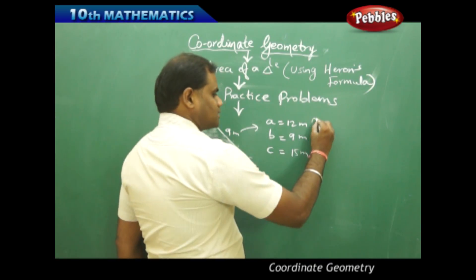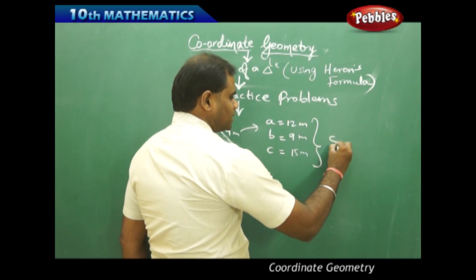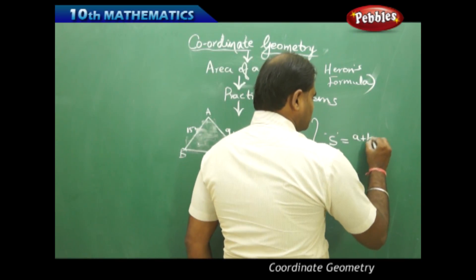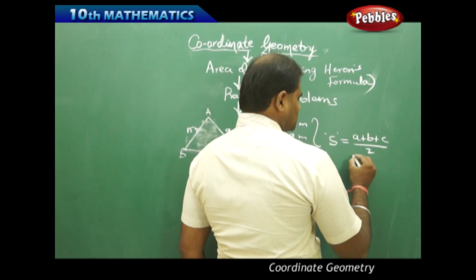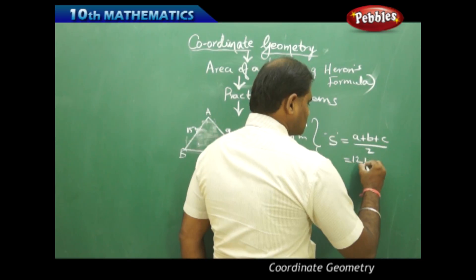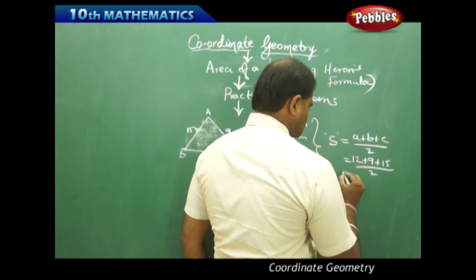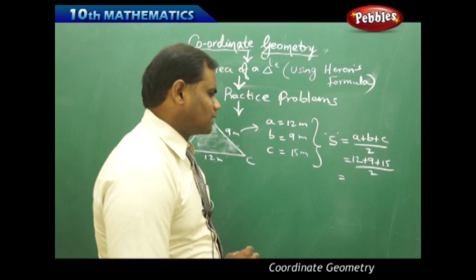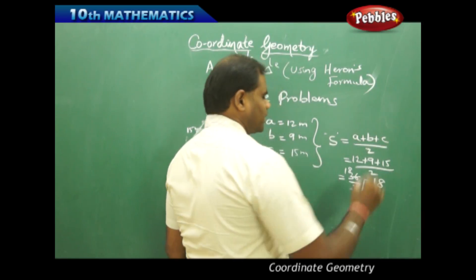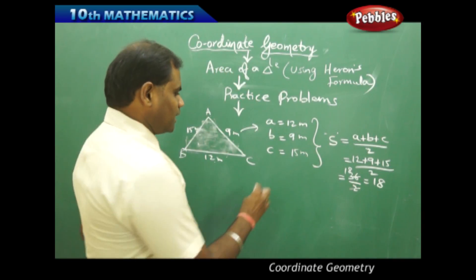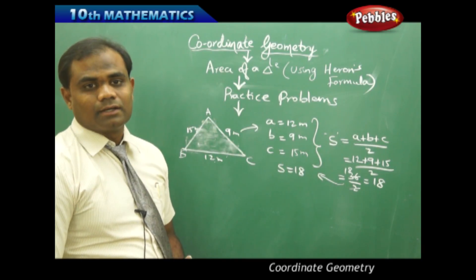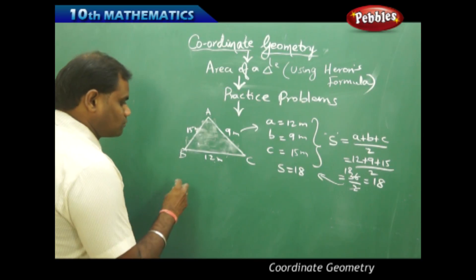Using the three sides to apply Heron's formula, I first need to find the semi-perimeter S, given by (A plus B plus C) divided by 2. Substituting, that is (12 plus 9 plus 15) divided by 2, which equals 36 divided by 2, which is 18. Therefore, my S is 18, which I will use along with A, B, and C in finding the area using Heron's formula.